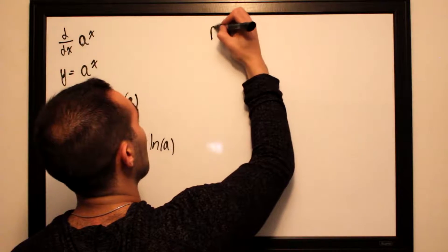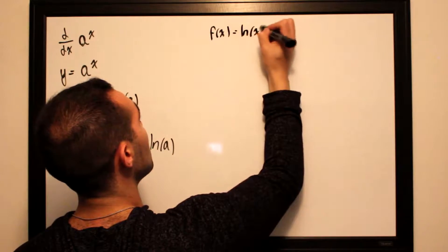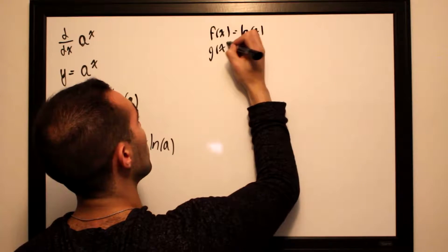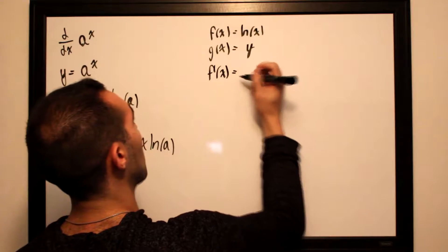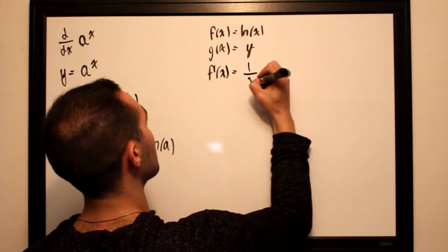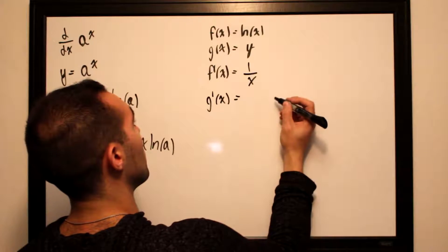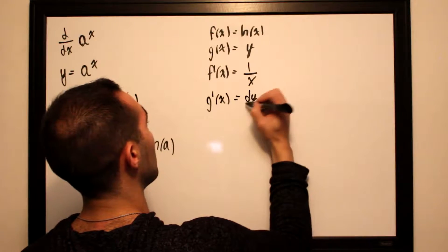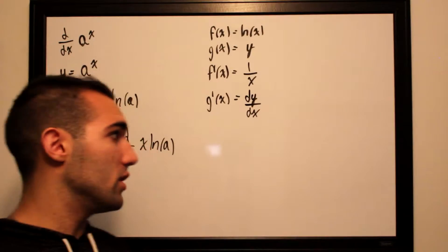So f(x) will be ln(x), g(x) will be y, f'(x) being the derivative of our outer function is 1 over x, and g'(x) being the derivative of our inner function is dy/dx, which we will eventually be solving for in this video.